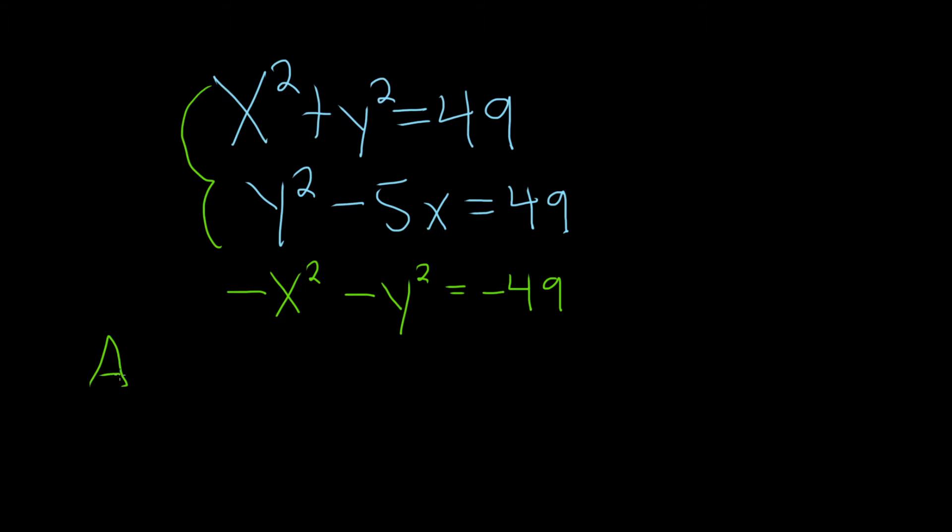And now let's go ahead and add these equations. When you add here, these will cancel and you'll just get negative 5x minus x squared, because it's this plus this, this plus this, and then this plus this is 0.